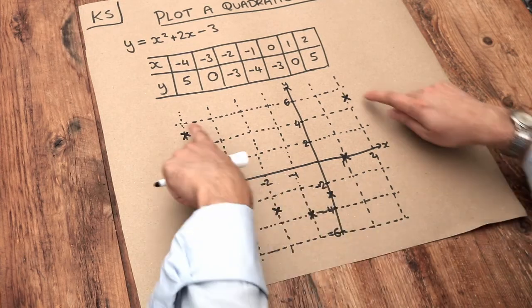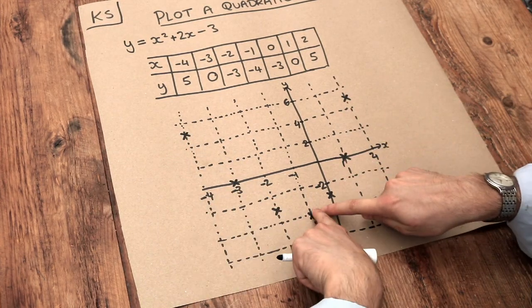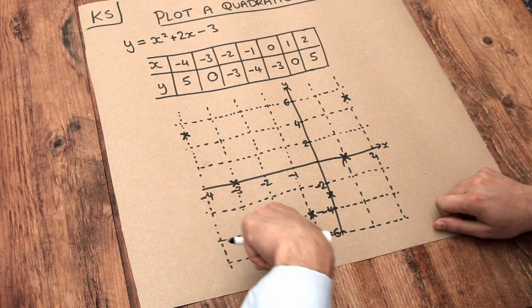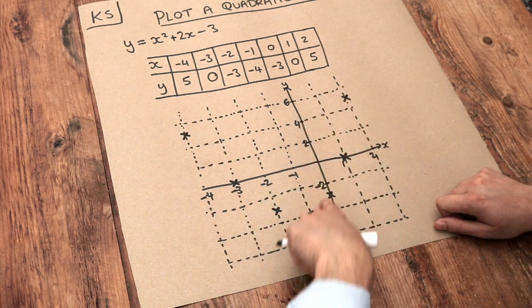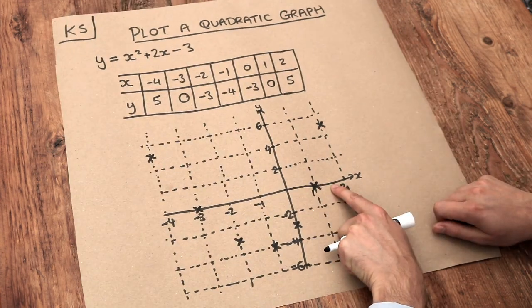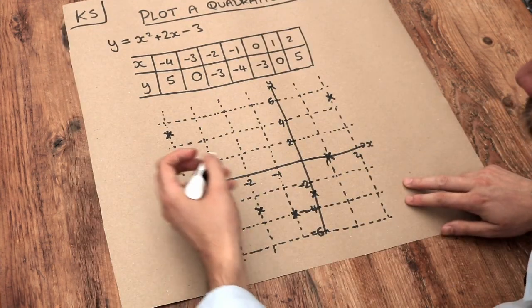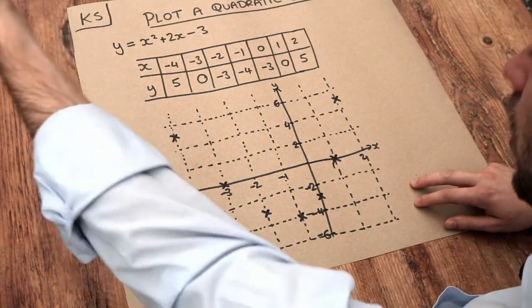Now we've got all our points. And notice the points seem to be symmetrical. Like these are level, these are level, these are level. And can you see this seems to be forming some kind of curve. If we were to use values of x in between, so for example, if we were to use x as 1.5, it should be somewhere between these two points here.